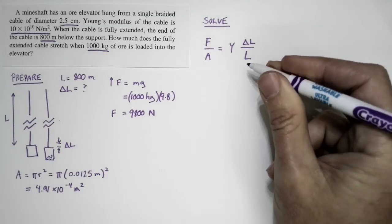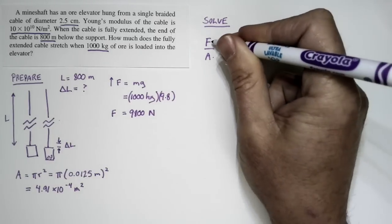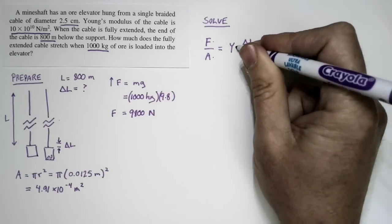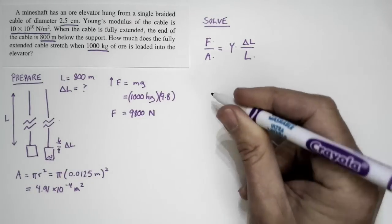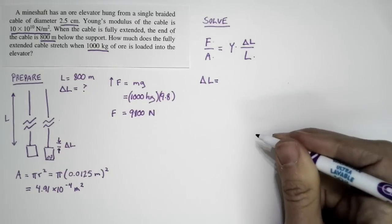We know everything in this problem. We know the length of the cable, the cross-section area, the force that's applied to it, and Young's modulus. The only thing we don't know is the change in length of the cable—that's what we're trying to find.